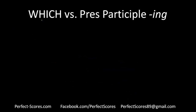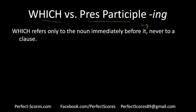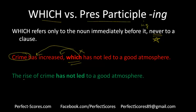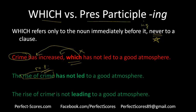A very important difference: which versus the present participle (ing). Which refers only to the noun immediately before it, never to a clause. For example, 'crime has increased, which has not led to a good atmosphere' — which is incorrectly referring to the increase rather than the noun crime. The correct version: 'the rise of crime, which has not led to a good atmosphere' — where which properly refers to the noun phrase.